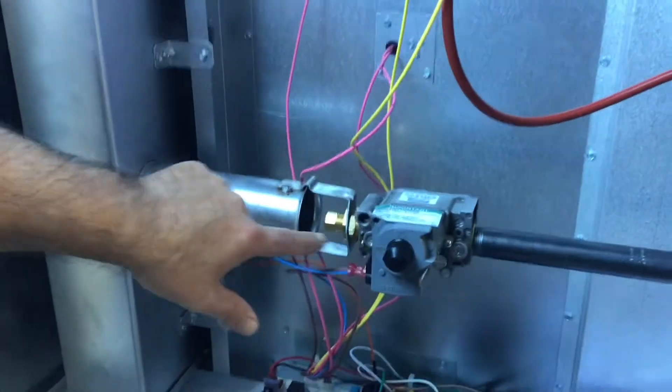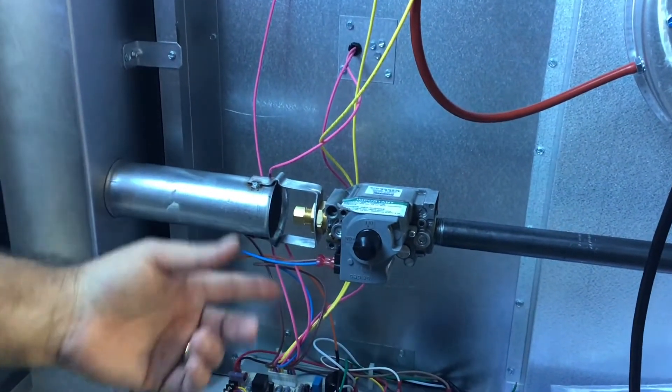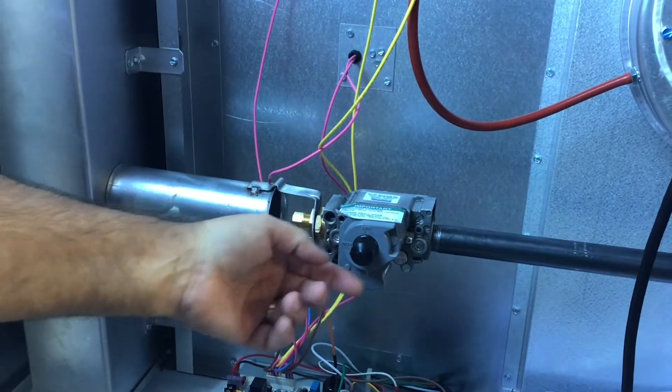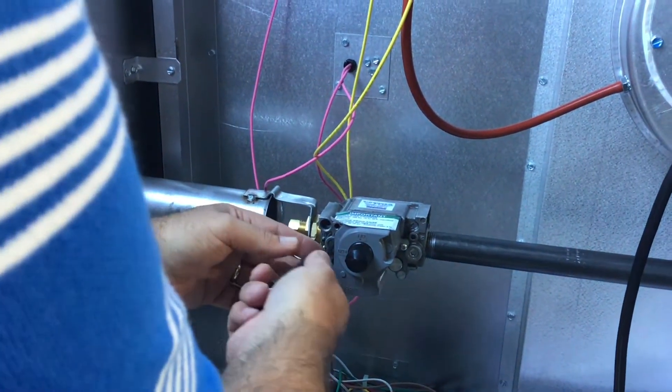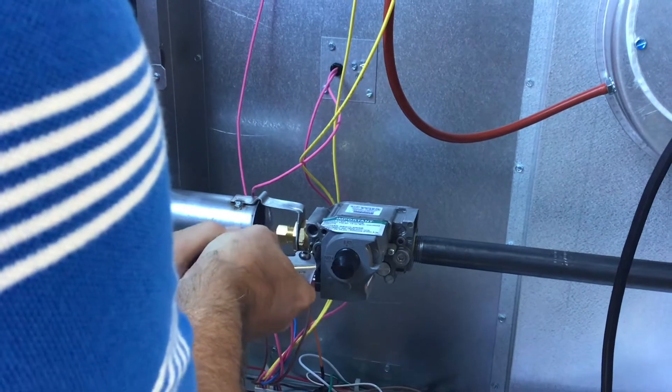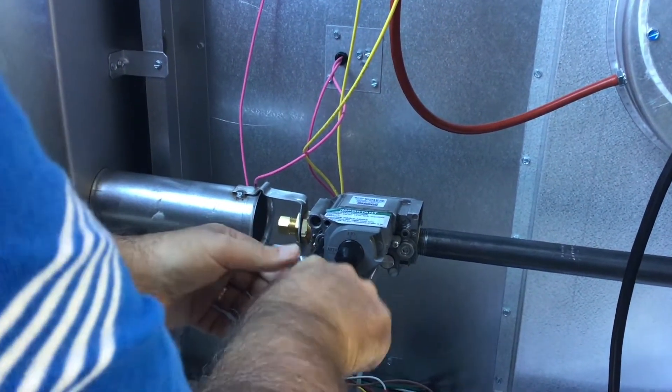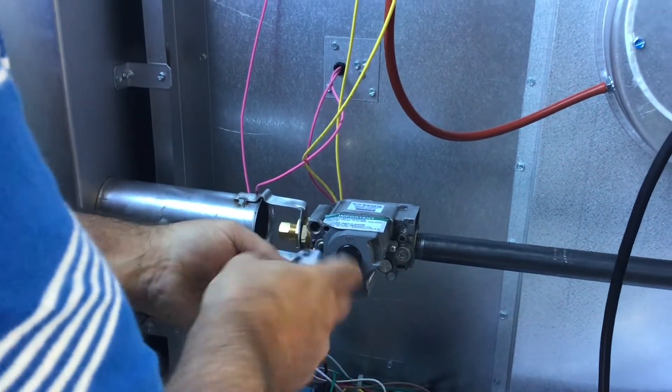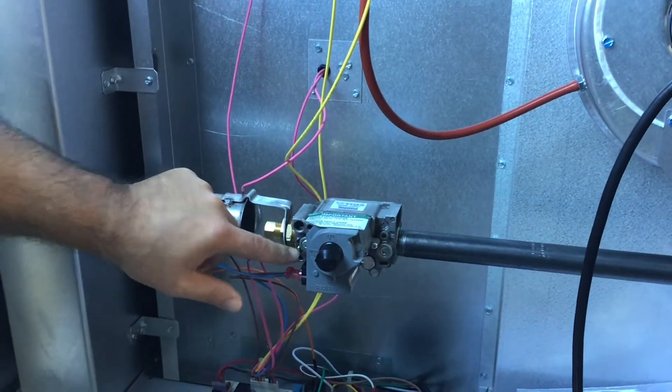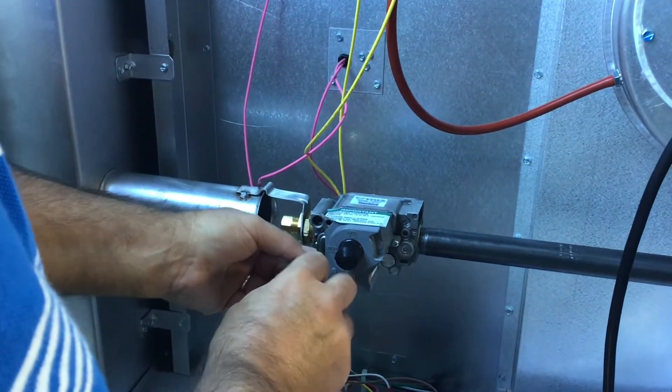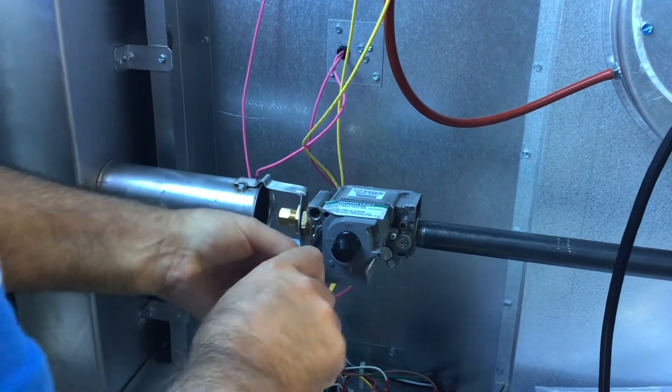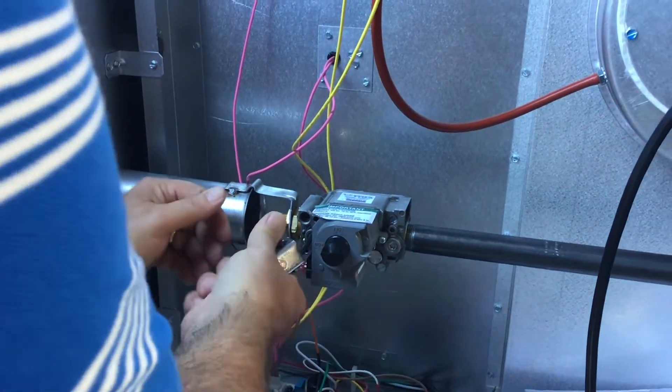Then we're going to check the outlet side and the way we're going to check the outlet side is we're going to have to actually run the unit but same principle here. Remove the Allen key, insert your manometer here and we're looking for 3.5 inches of water column when the unit is running.